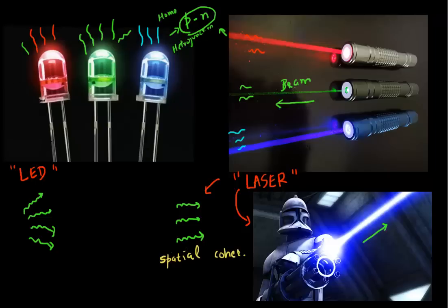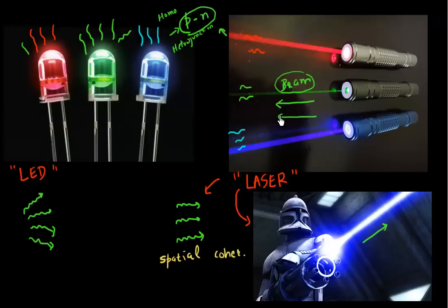Another thing you must have noticed is that the light which comes out from a laser — if you have used a laser pointer — appears to be of very high intensity and very monochromatic. If you have used a green laser pointer, you might have been in awe of how bright it was. This is conveyed in this popular image where a person is wearing a mask to protect himself from the intensity of the light beam. So the light from a laser has higher intensity and is more monochromatic.